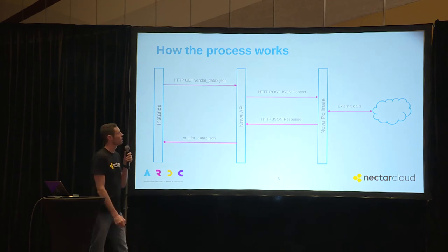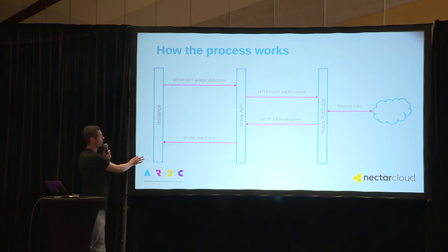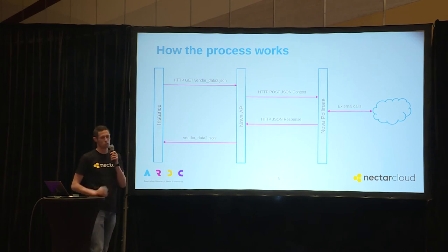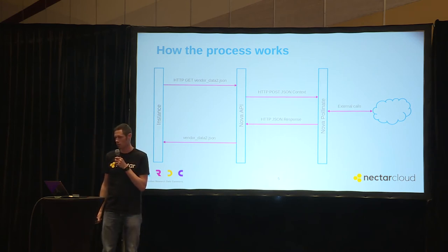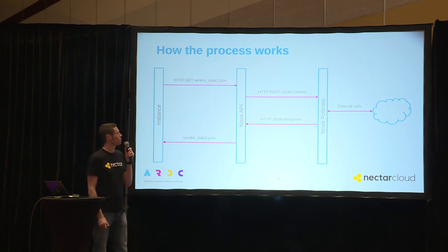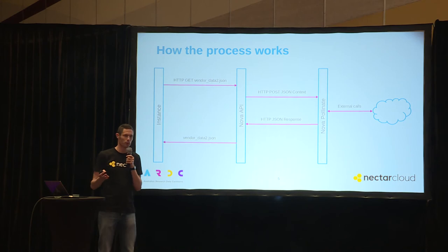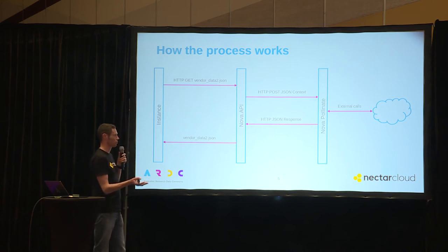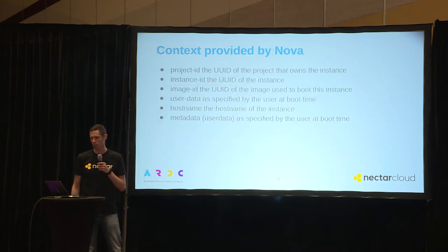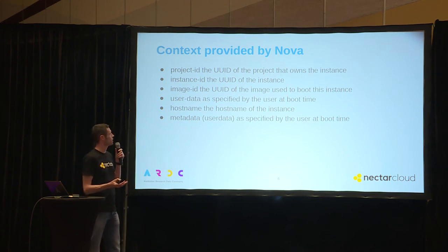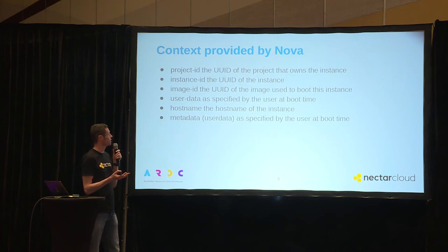This diagram shows how it works. Starting from the top, you've got your instance on the left. The first thing that happens is the instance makes a request to get the vendor_data2.json file. It goes through the Nova API, which then passes that request along with the context through to the Nova Pollinate server. Based on the plugins you've built, it will make external calls to whatever system is appropriate, then pass the response back through Nova and back to your instance. The context provided by Nova includes: project ID, instance ID, image ID, user data, hostname, and metadata.